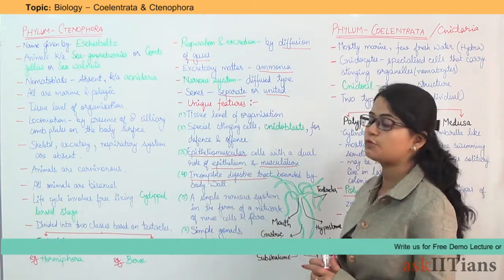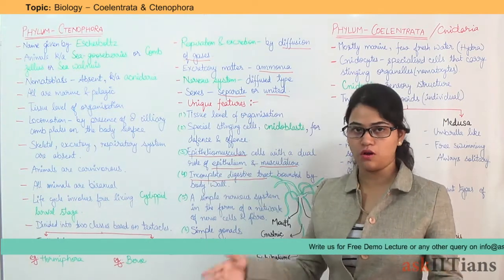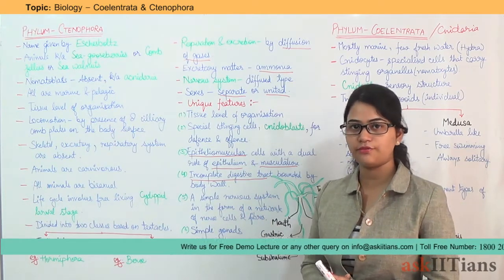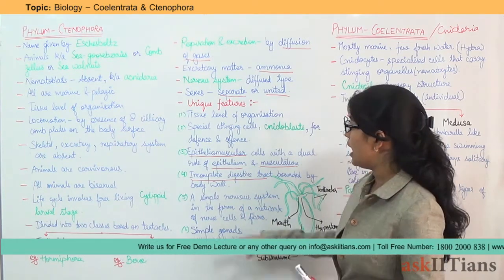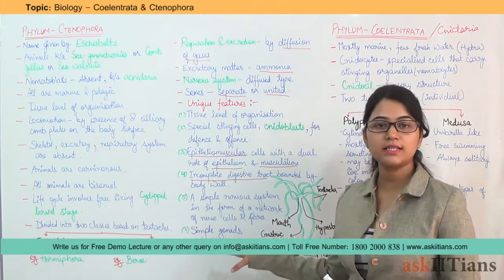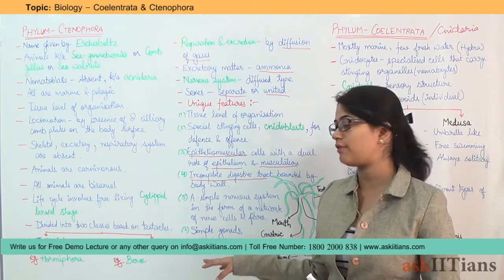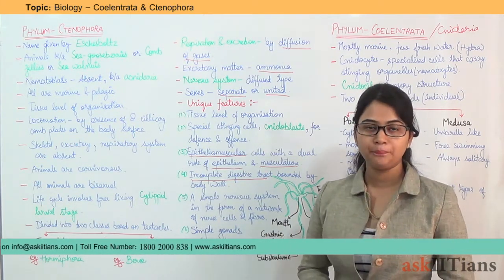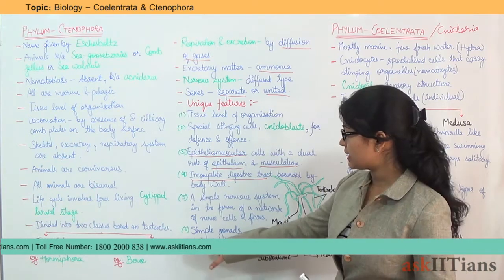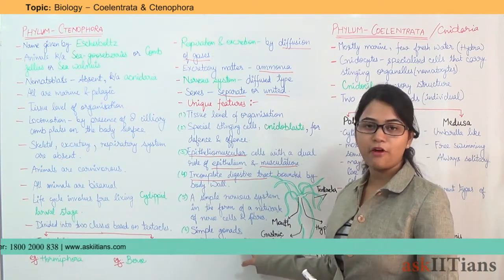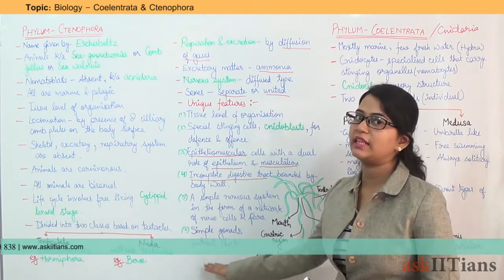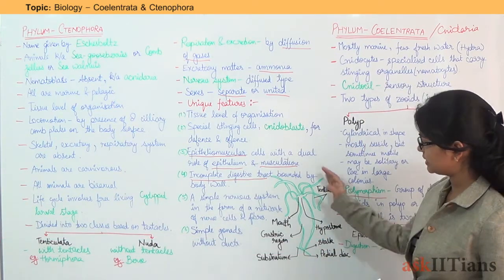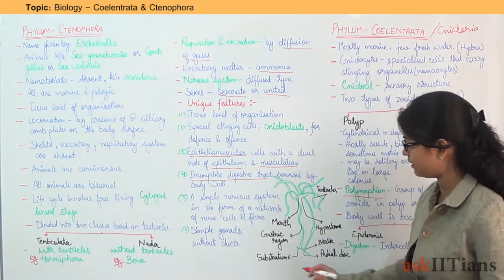An incomplete digestive tract is present, bounded by the body wall. A simple nervous system is present in the form of a network of nerve cells and fibers. Simple gonads are found without ducts.